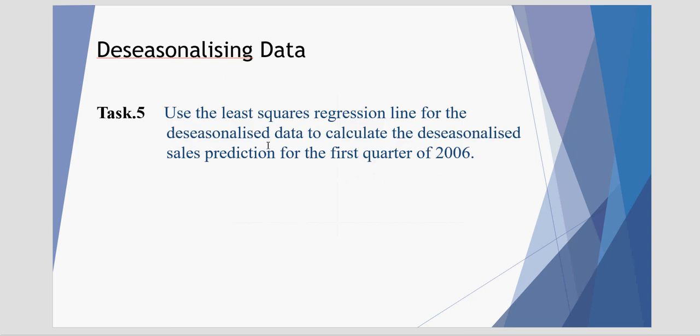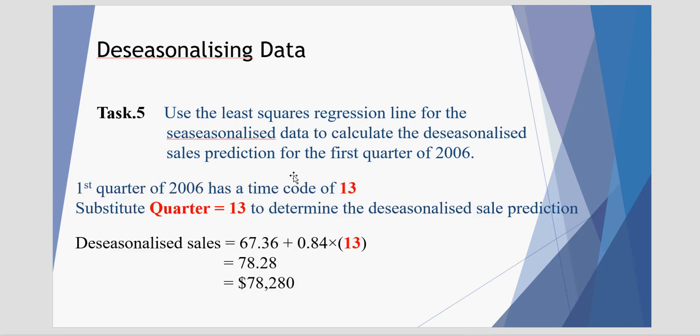Finally, we're asked to use the least-squared regression line for the deseasonalized data to calculate the deseasonalized sales predictions for the first quarter of 2006. Our data up until now finished at 2005. For fourth quarter of 2005 had a time code of 12. So the next quarter, which is the first quarter of 2006, would have a time code of 13.